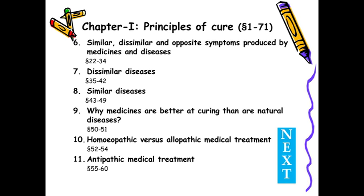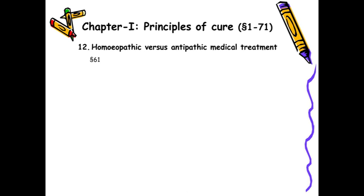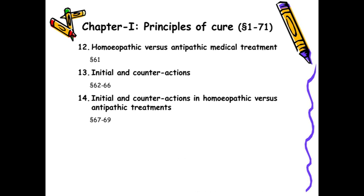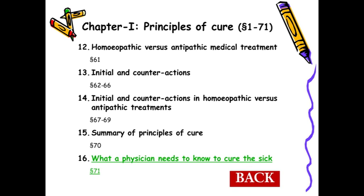Homeopathic versus allopathic medical treatment has been described from aphorism 52 to 54. Then aphorism 55 to 60 covers antipathic medical treatment. Then homeopathic versus antipathic medical treatment — initial action and counter action, primary and secondary action — that is aphorism 62 to 66. Then initial and counter actions in homeopathic versus antipathic treatment, aphorisms 67 to 69. The summary of principles of cure has been given in aphorism 70.